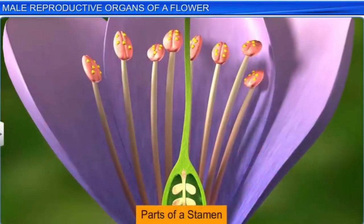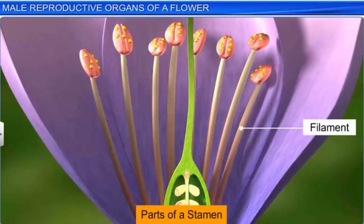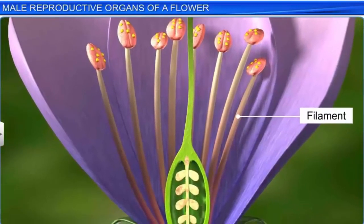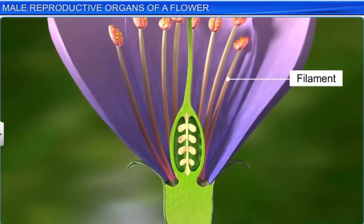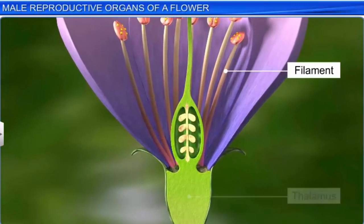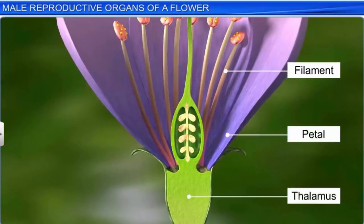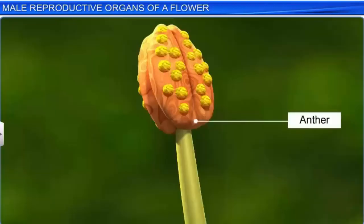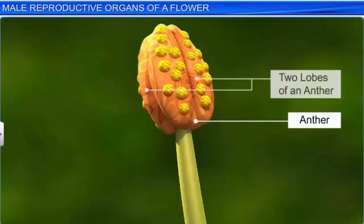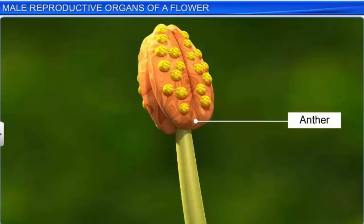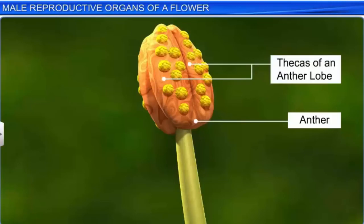Every stamen consists of a filament and an anther. The filament is a long and slender stalk whose proximal end is attached either to the thalamus or the petal of the flower. The anther, on the other hand, is bilobed in nature, with each lobe being dithecous, or consisting of two thecas, that are separated by a longitudinal groove that runs through the anther.